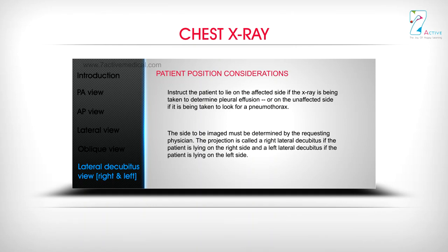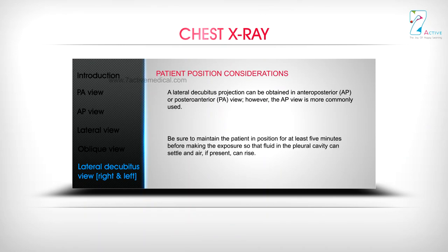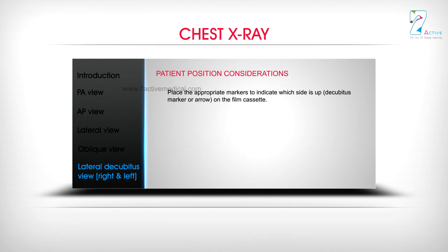The projection is called a right lateral decubitus if the patient is lying on the right side, and a left lateral decubitus if the patient is lying on the left side. A lateral decubitus projection can be obtained in AP or PA view; however, the AP view is more commonly used. Be sure to maintain the patient in position for at least 5 minutes before making the exposure, so that fluid in the pleural cavity can settle and air, if present, can rise. Place the appropriate markers — a decubitus marker or arrow on the film cassette — to indicate which side is up.